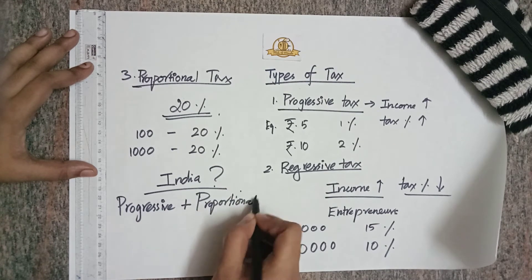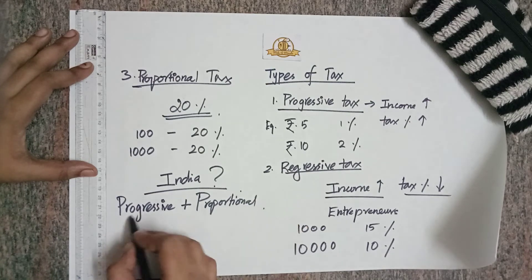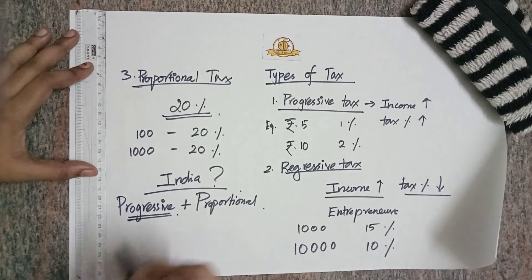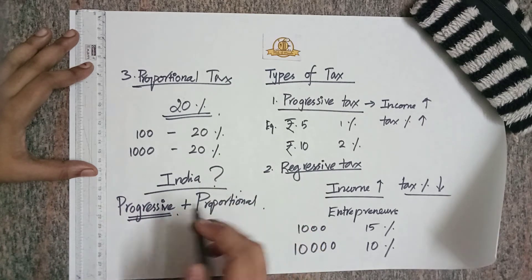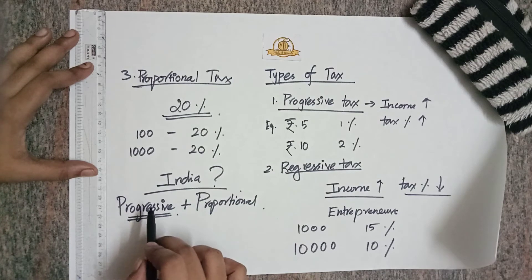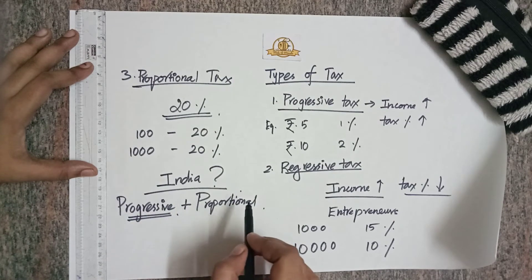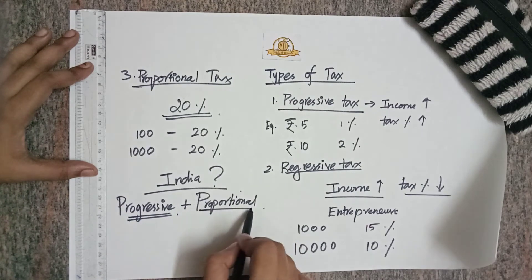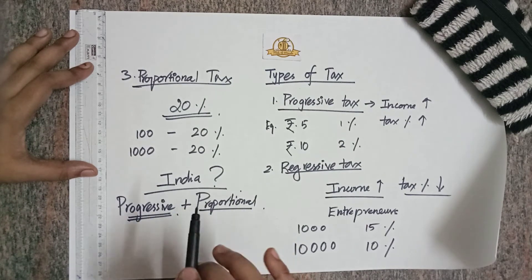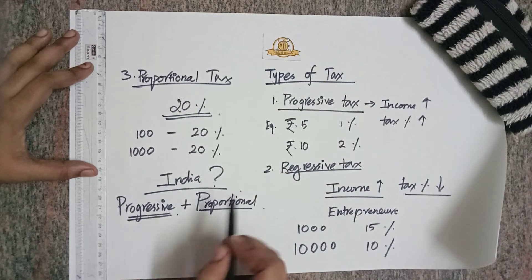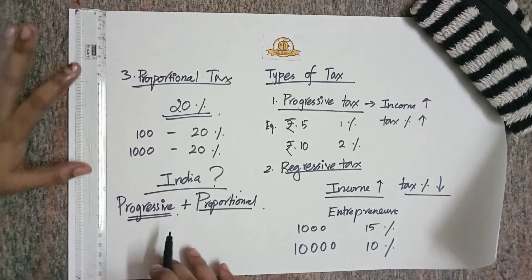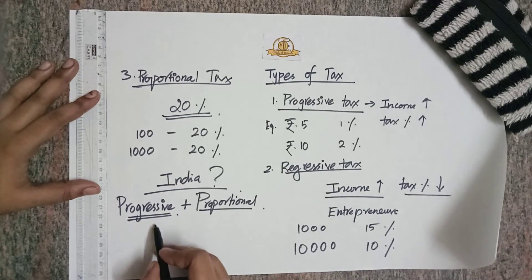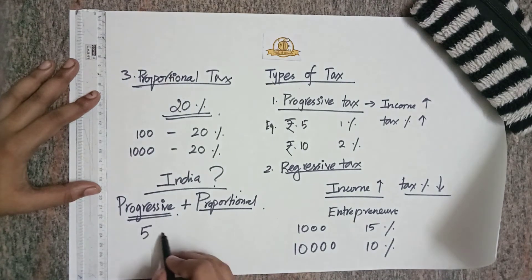In progressive tax, if there is a rise in income then the tax percentage automatically increases, whereas in proportional tax there is a flat tax rate slab. Combining these two, India has a tax slab system — with slabs at, say, 5%, 10%, and 20%.